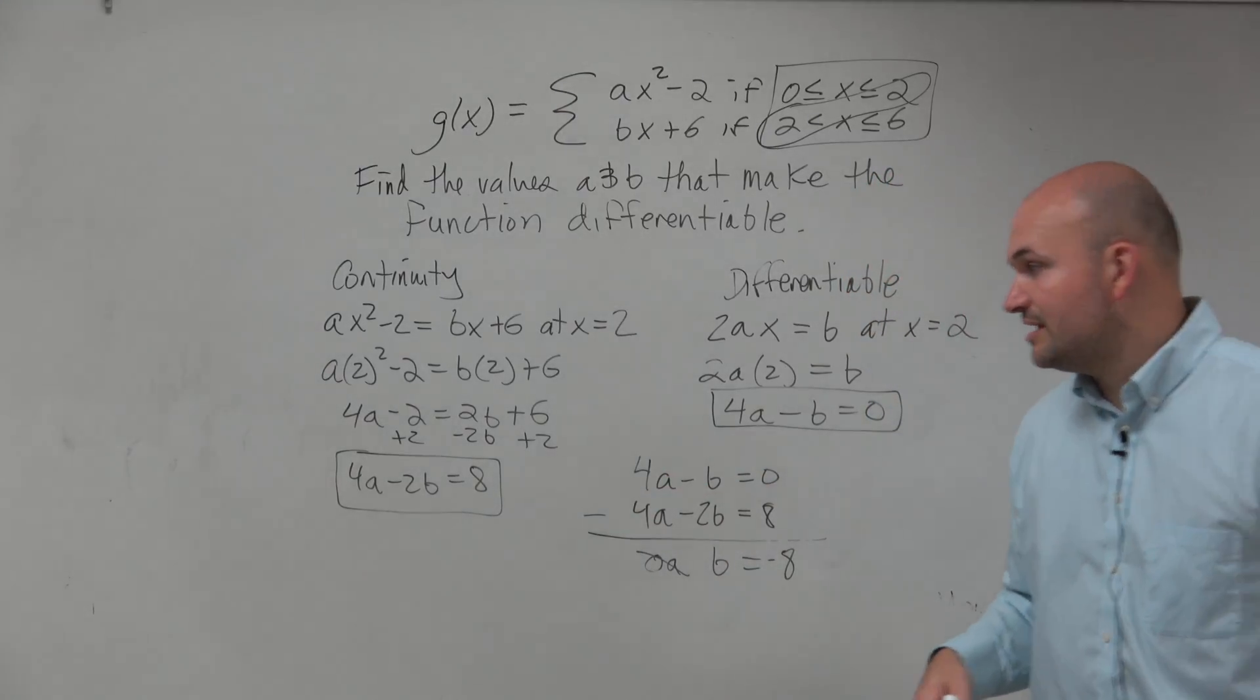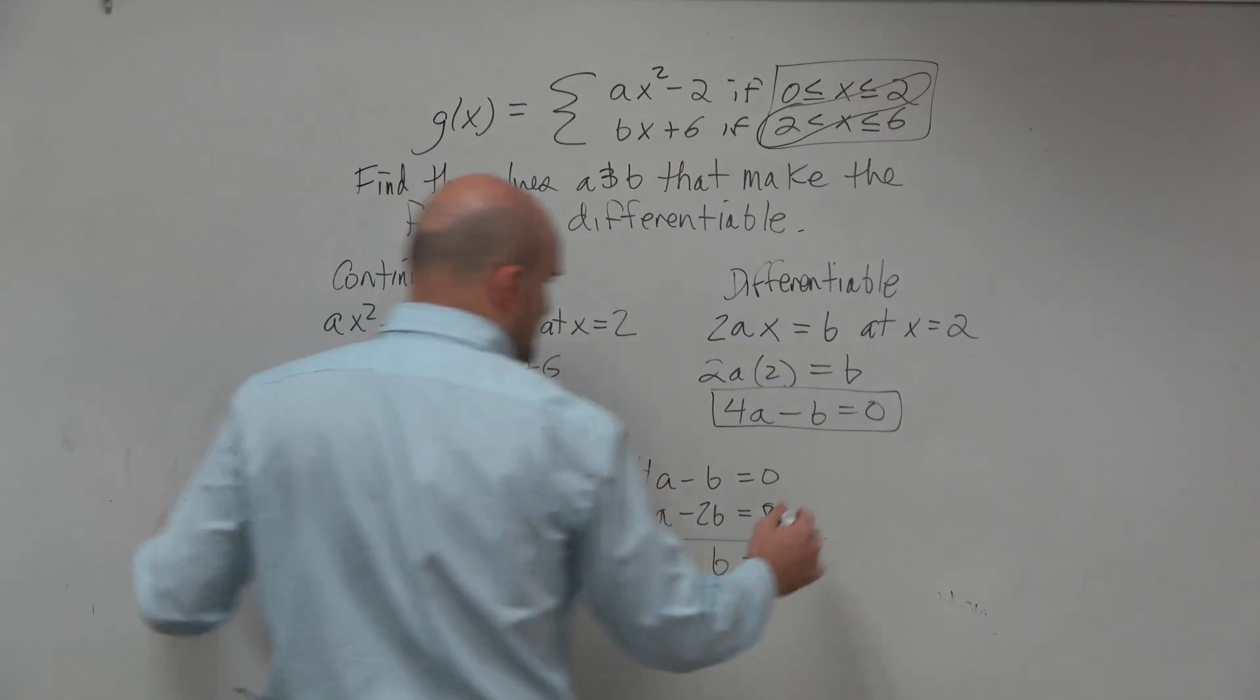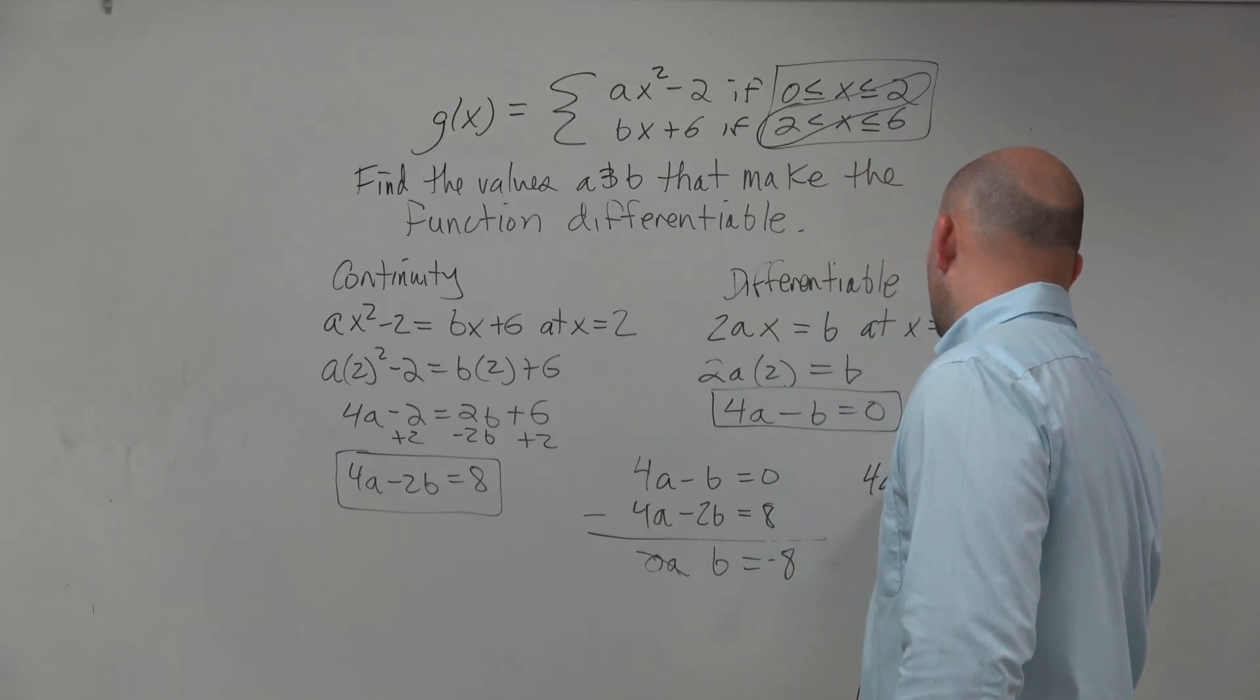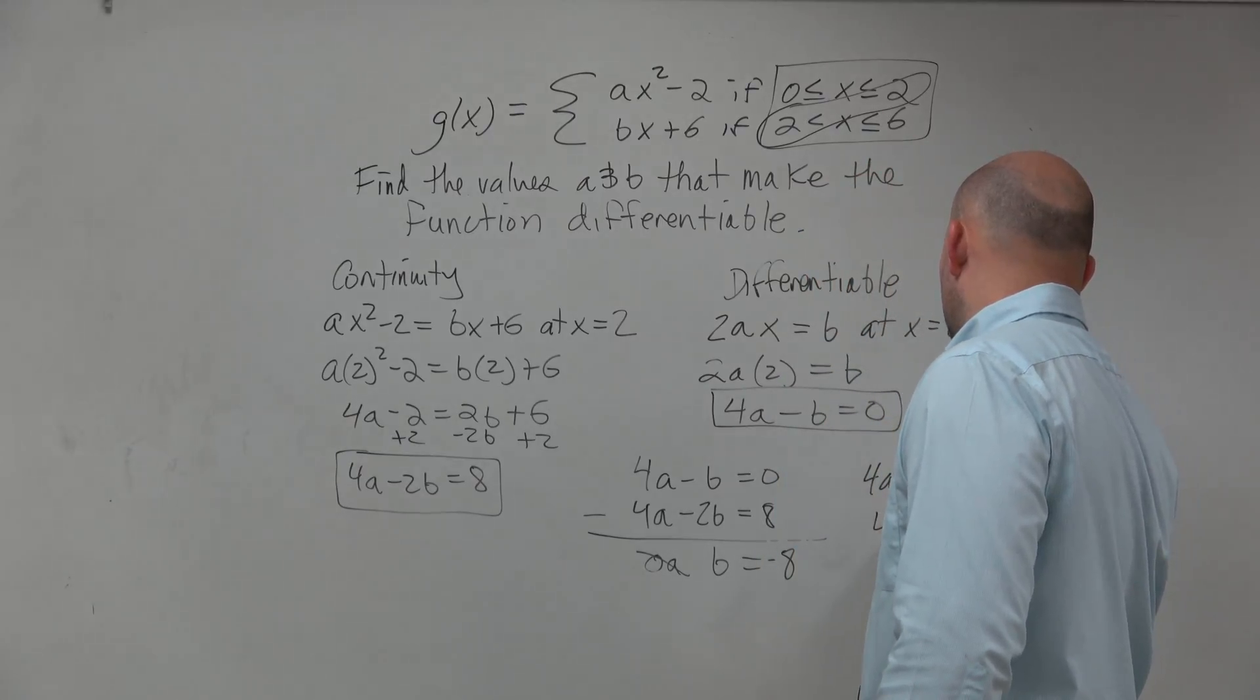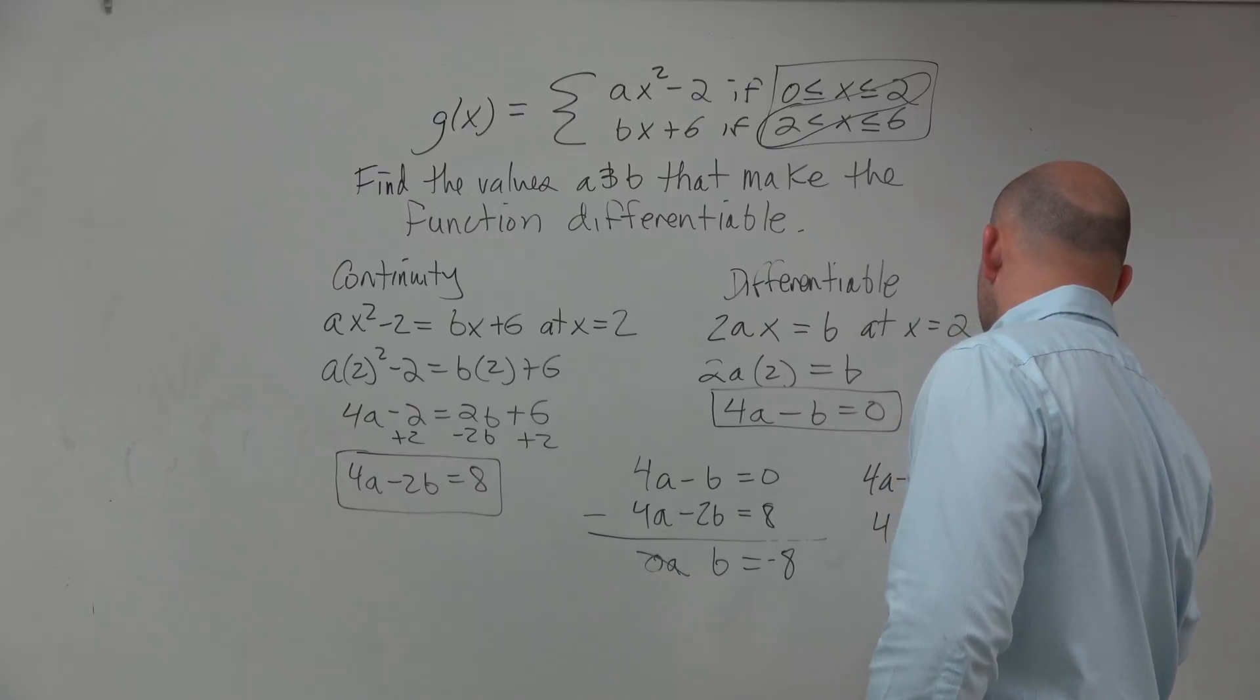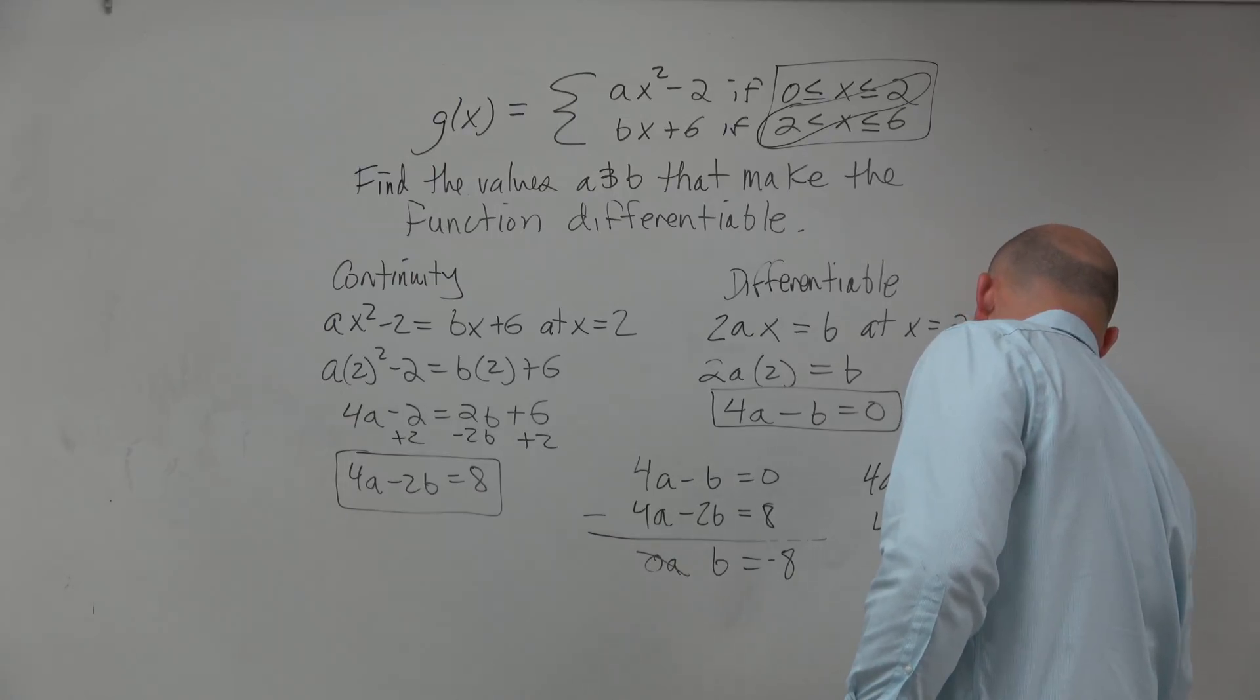Alright, so b equals negative 8, and then I can go back to one of these equations. Doesn't matter which one. Let's plug it into this one. That seems a little bit simpler. 4a minus negative 8 equals 0. 4a plus 8 equals 0. Minus 8 minus 8. 4a equals negative 8. Divide by 4. A equals negative 2.